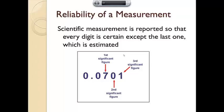Whenever we take a measurement, there are numbers that are known and there are numbers that are estimated. They are always reported so that every digit is certain, except for the very last one.